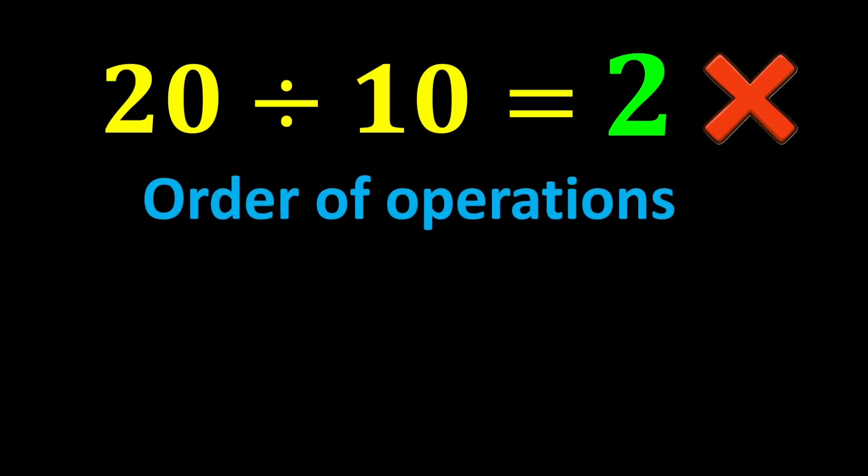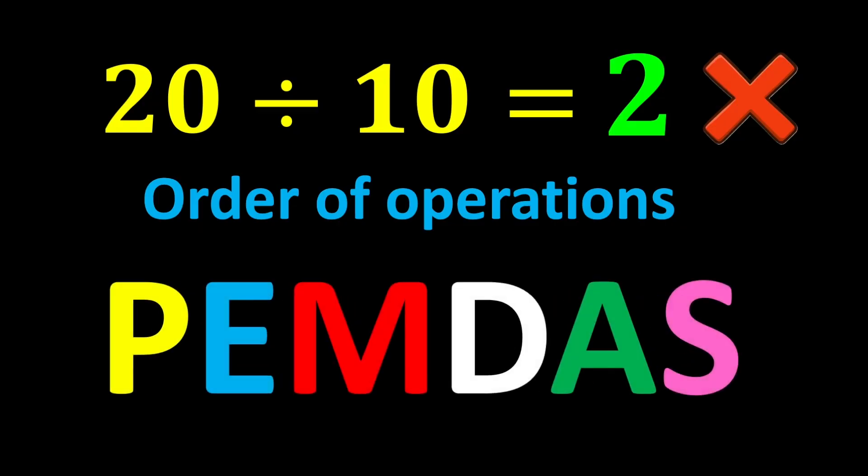The order of operations tells us that when we face a mathematical expression, we cannot start solving it from anywhere we like. Instead, we must follow a specific order called the correct order of operations. The correct order of operations is known by a short acronym called PEMDAS.